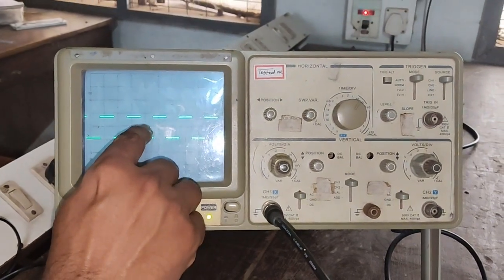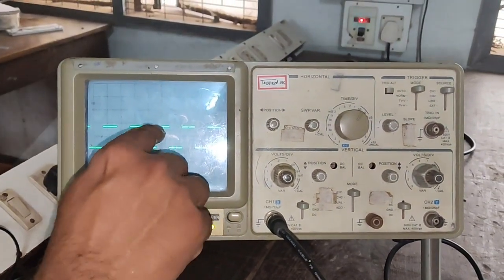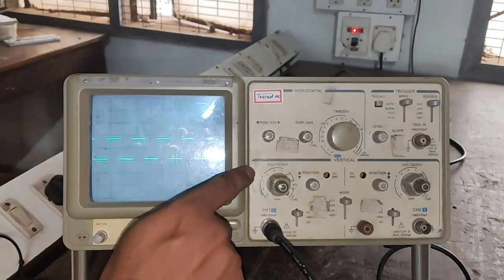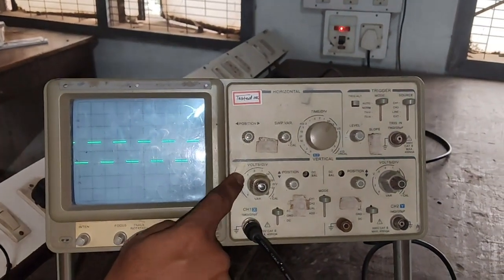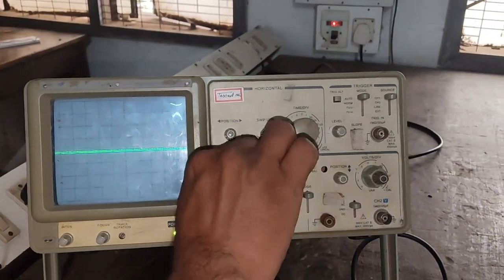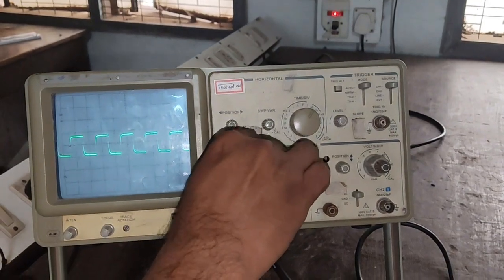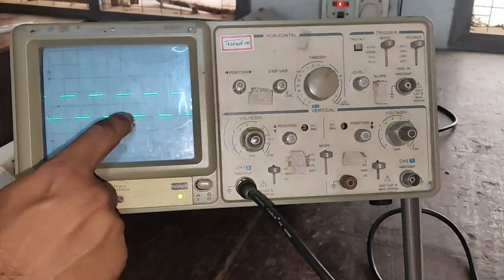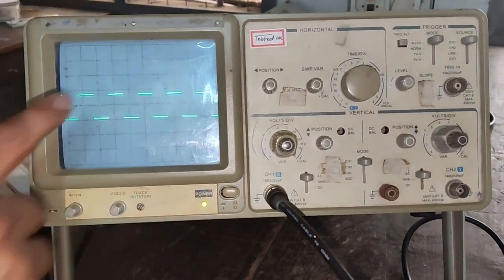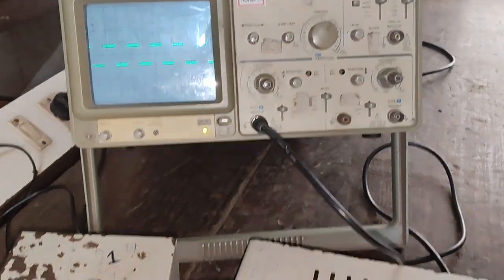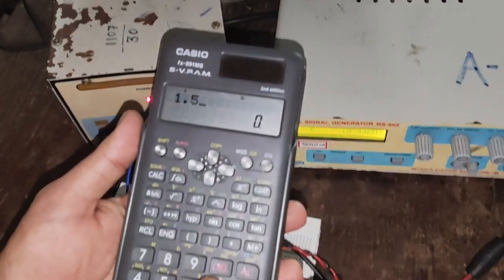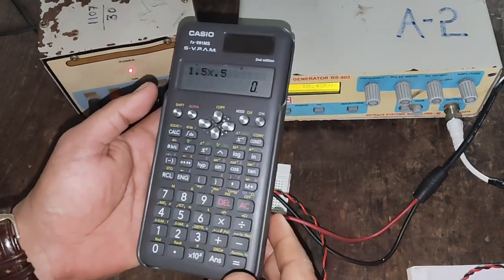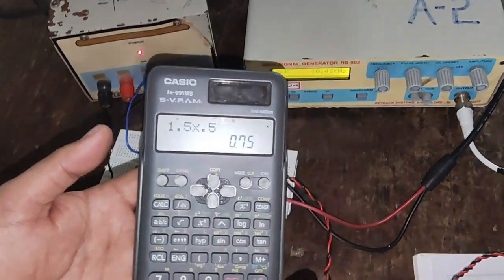This is 1 and 1.8. So, 1.8 into the number of division here is, this is volts per division. This is 0.5 volts. 1.8 into 0.5 volts. That turns out to be 1.5 into 0.5 volts. That turns out to be 0.75 volts.